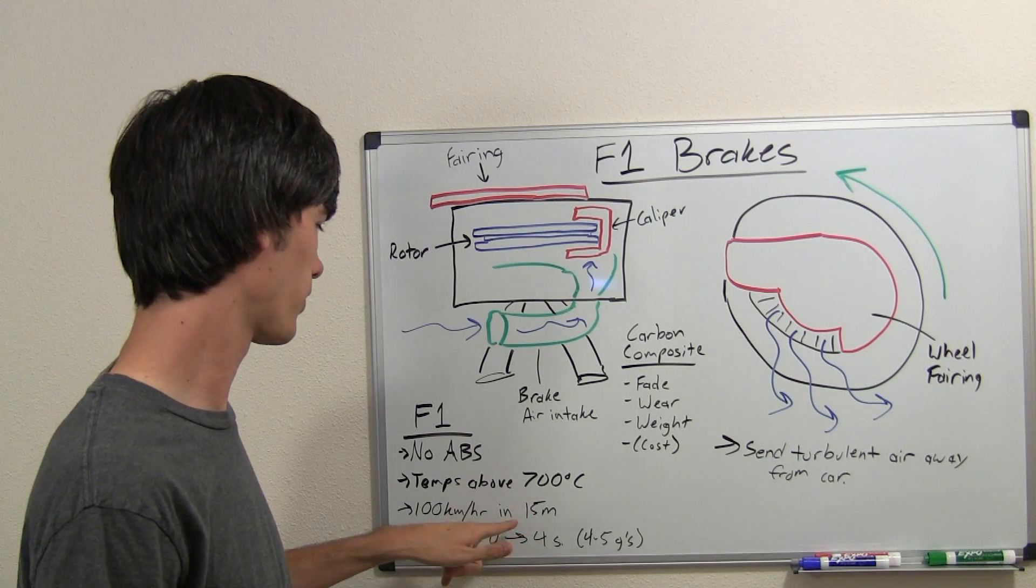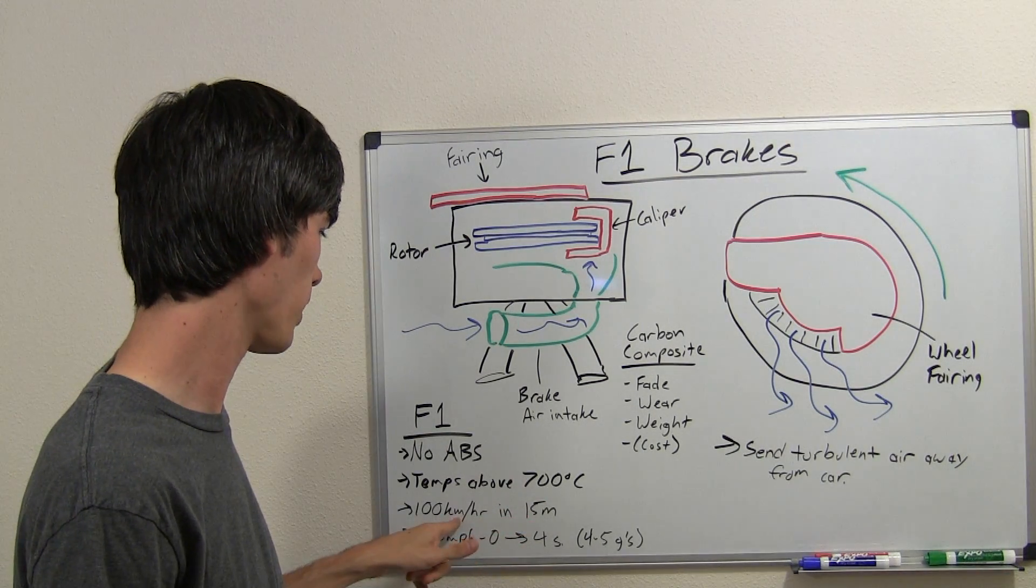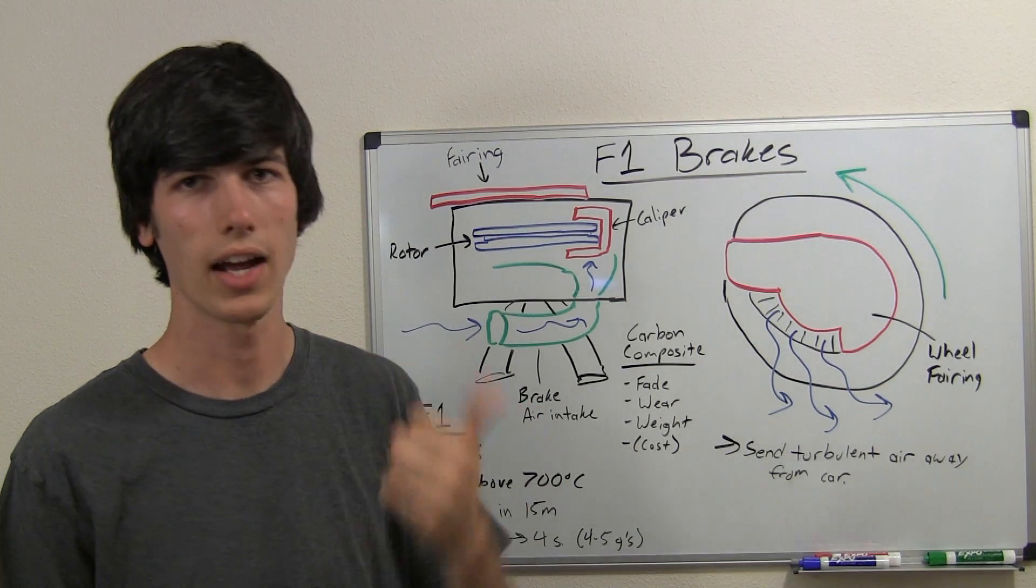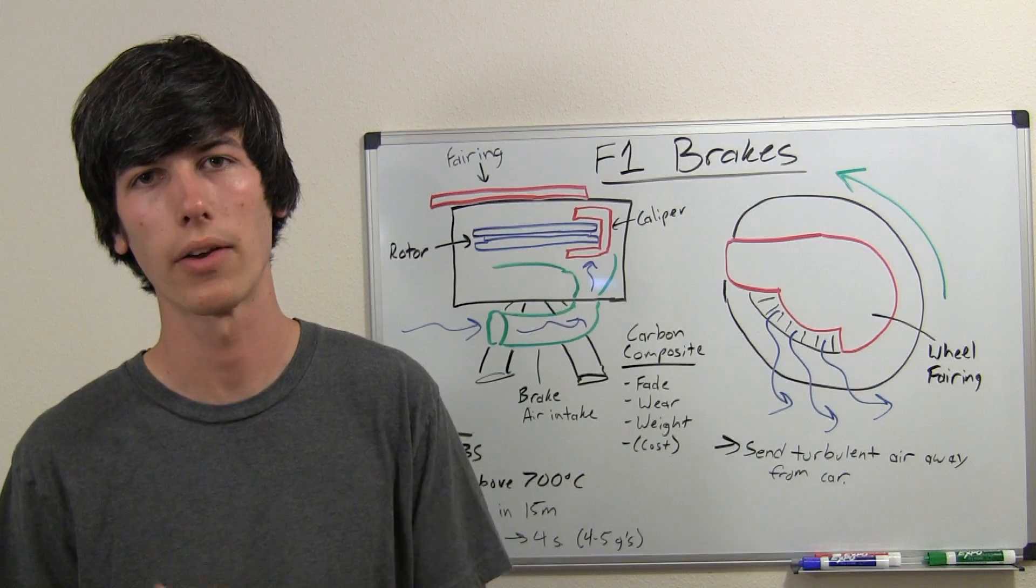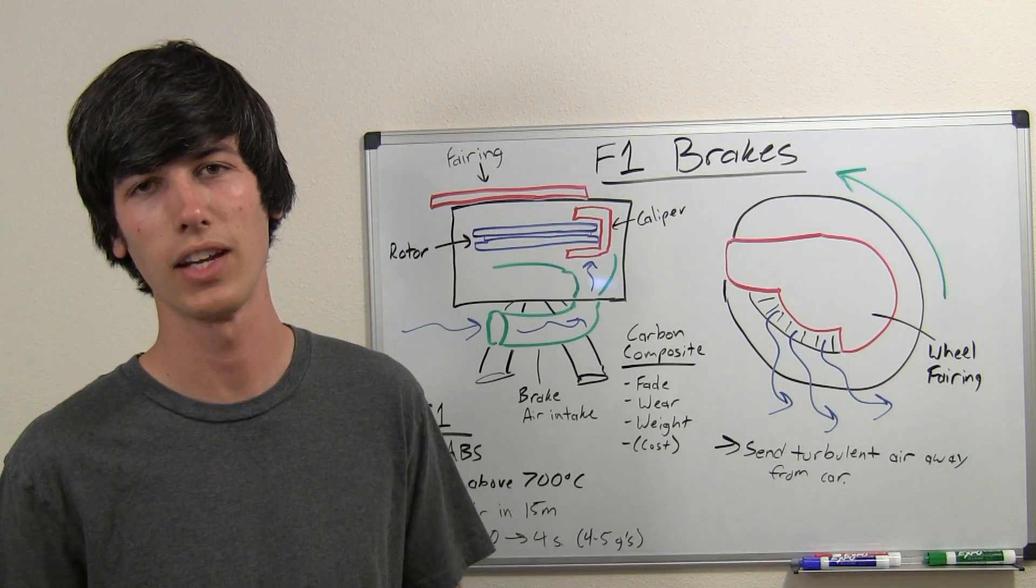So, a very interesting thing about Formula One and their braking, how incredible it is due to the tires and the down force, is how quickly they can stop. So from 100 kilometers per hour, they can stop in less than 15 meters.